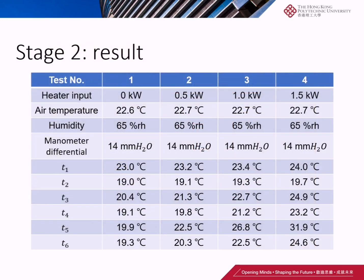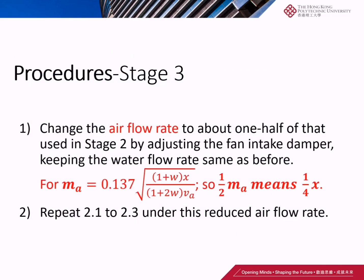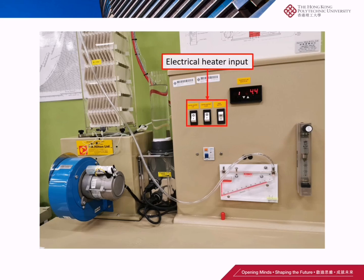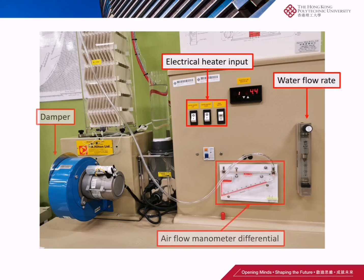Here is the table of results in 4 steps. For Stage 3, we need to change the air flow rate to about one half. According to the formula, we need to adjust the differential to one quarter of the baseline value by adjusting the fan intake damper, and keep the water flow rate the same as before. Then repeat steps 2.1 to 2.3 to reduce the air flow rate. You can pay attention to the change of the damper.